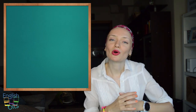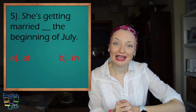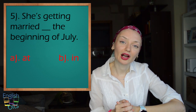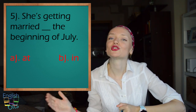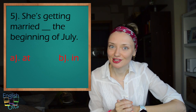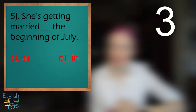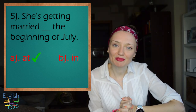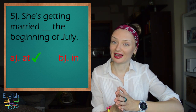Sentence number five: 'She's getting married — A) at the beginning of July, or B) in the beginning of July.' Which is the correct answer? The correct answer is: 'She's getting married at the beginning of July.'